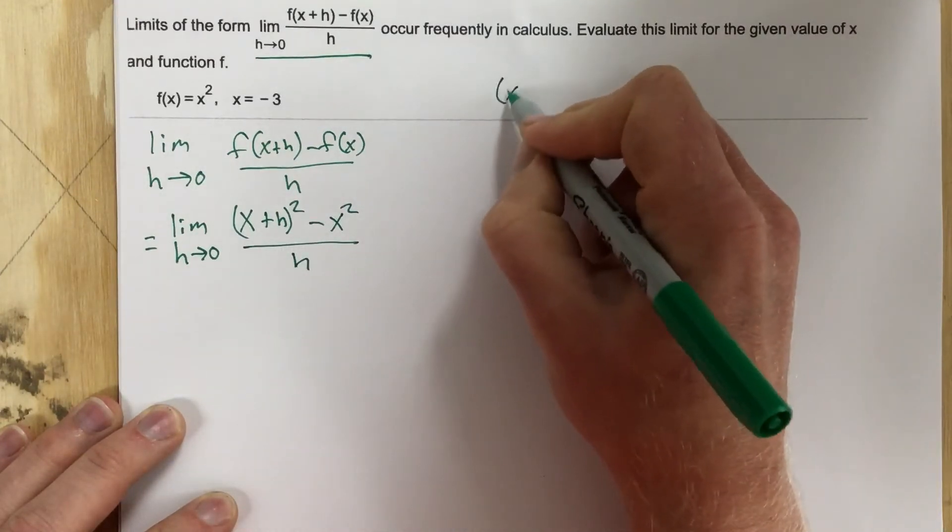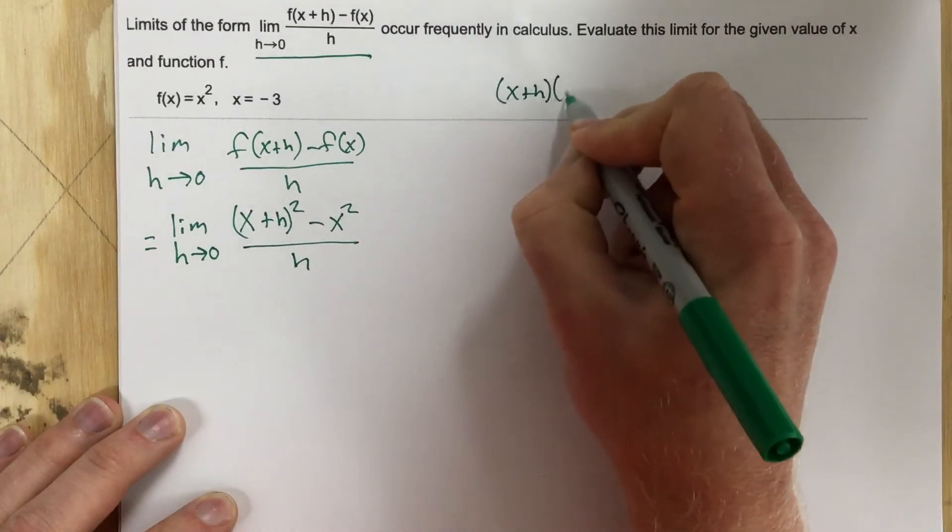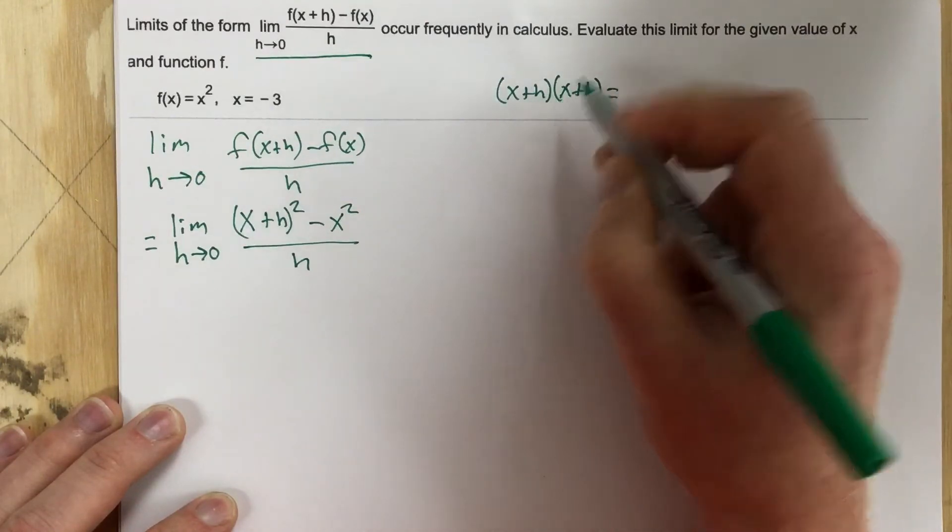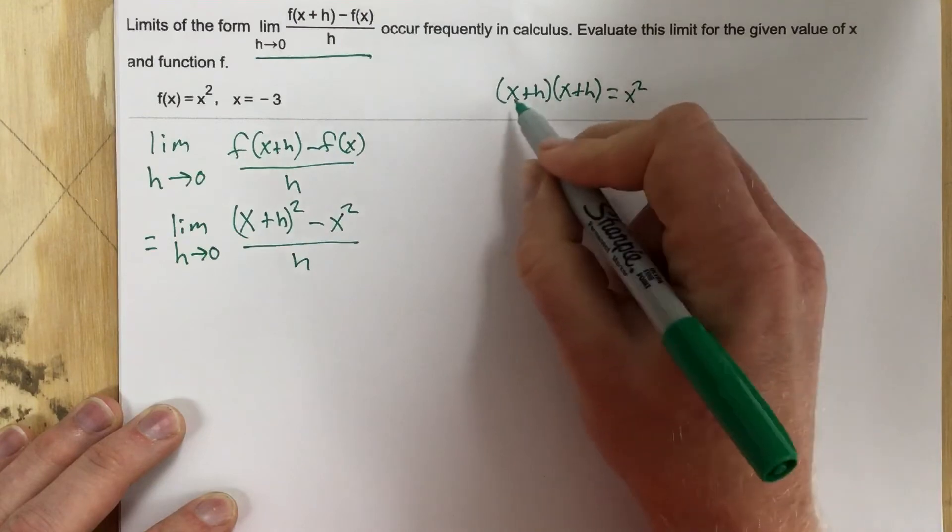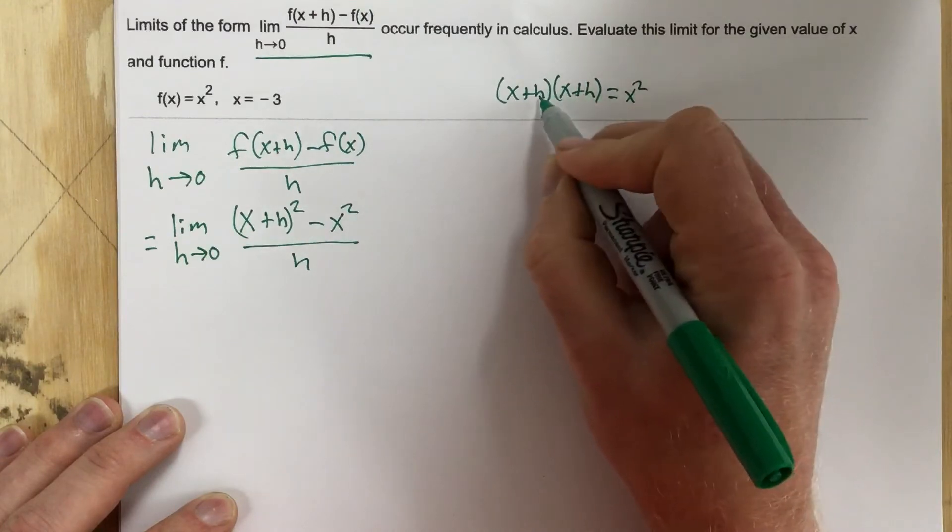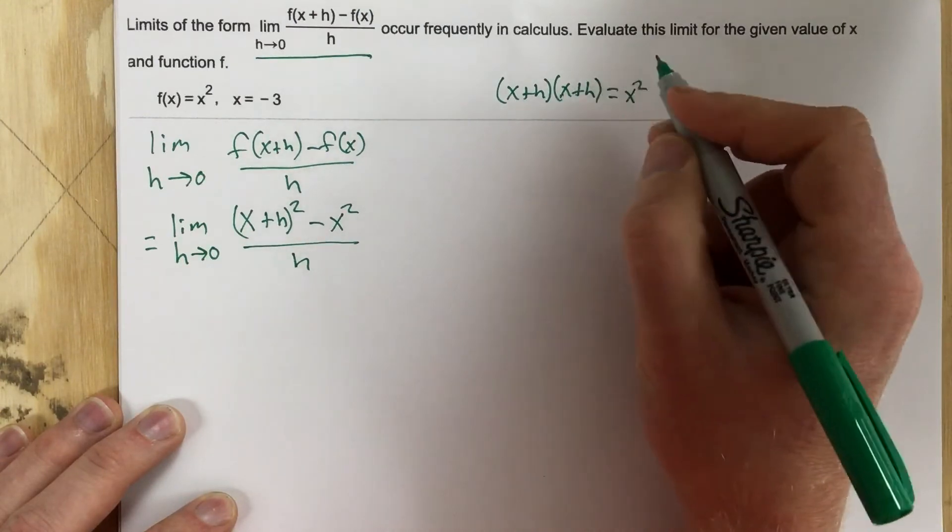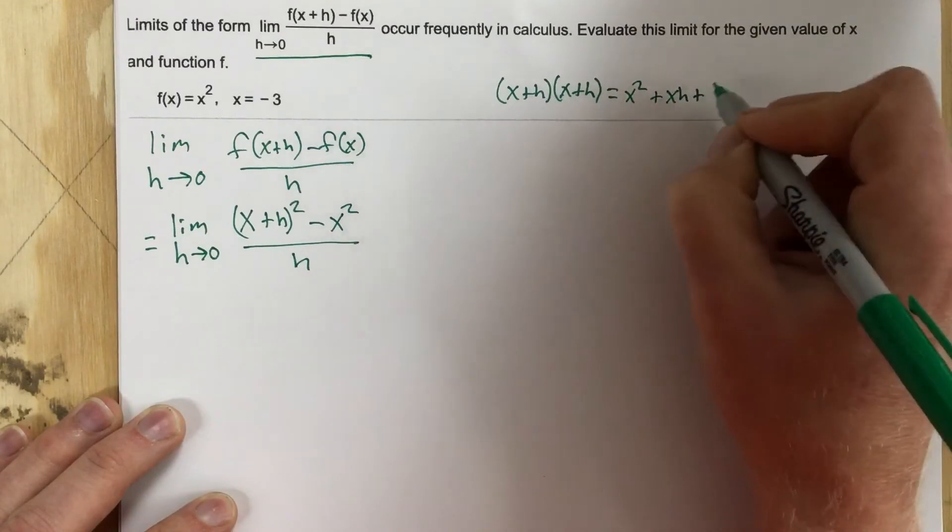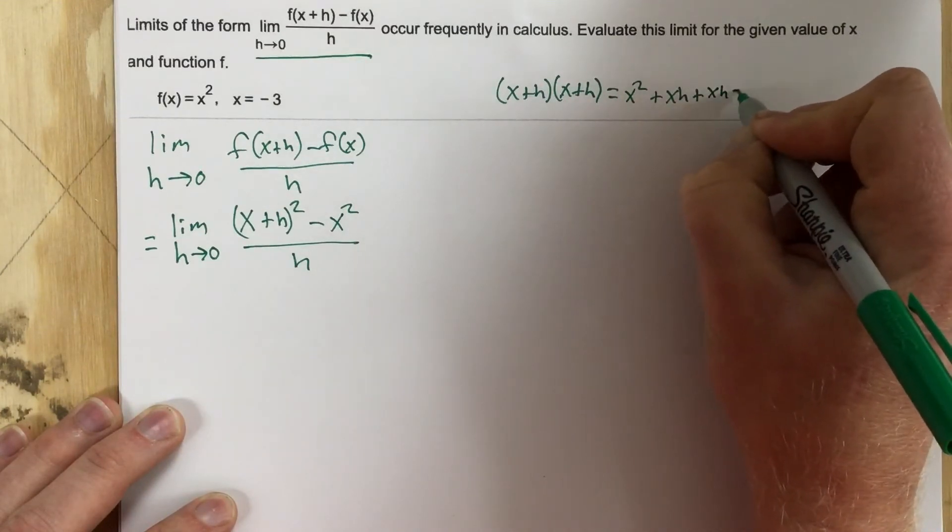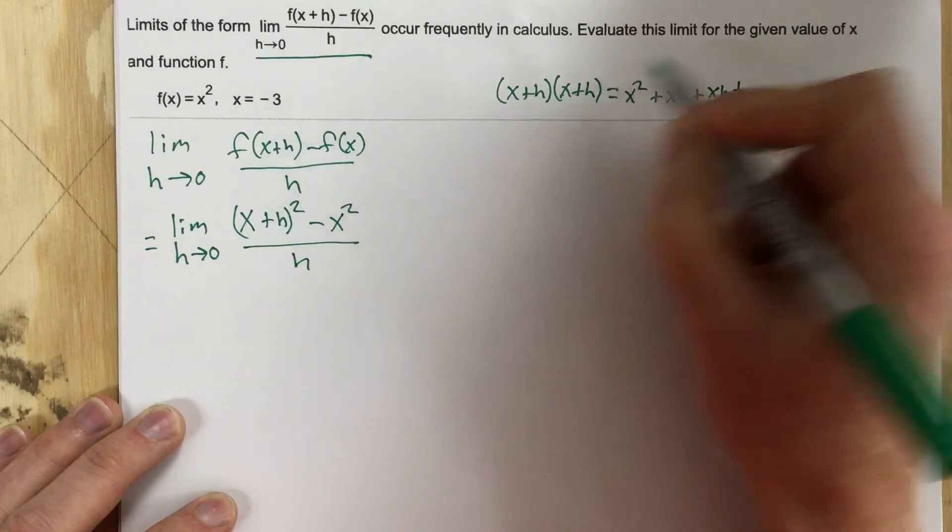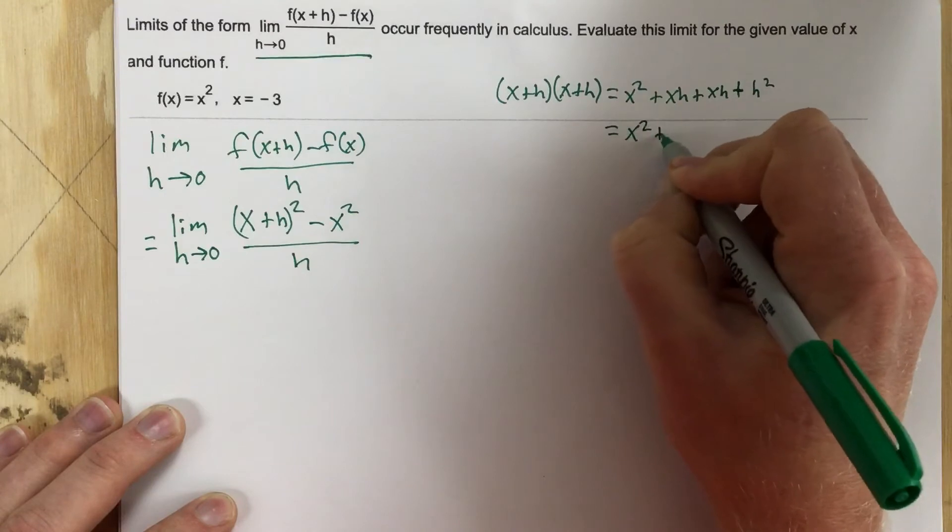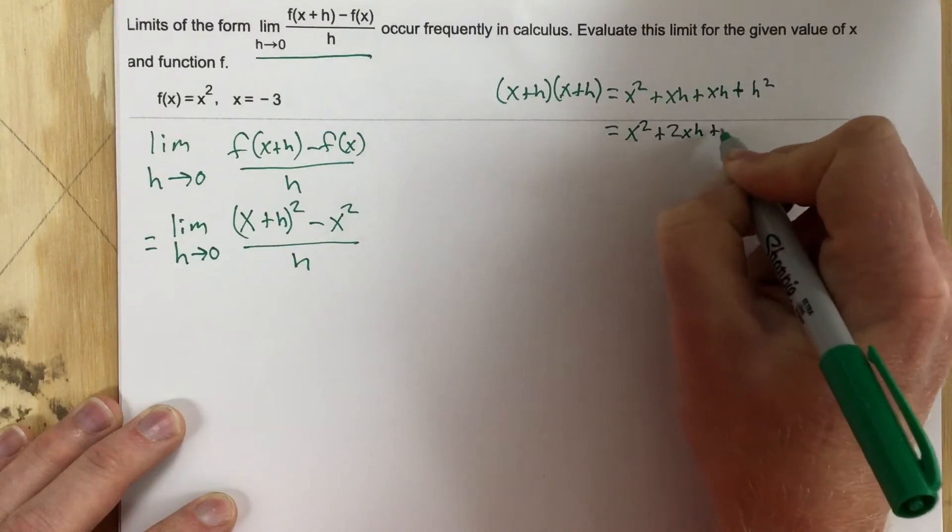I'm going to distribute x plus h squared, so it's x plus h times x plus h. I get x times x, which is x squared, plus x times h and h times x, so plus 2xh, plus h times h, which is h squared. So this is x squared plus 2xh plus h squared.